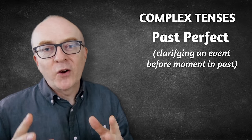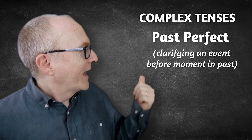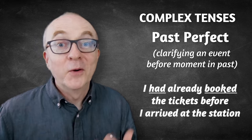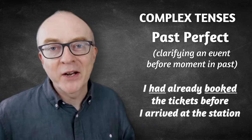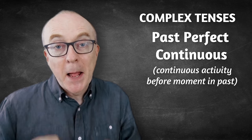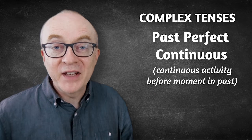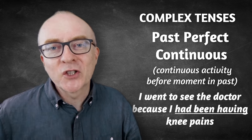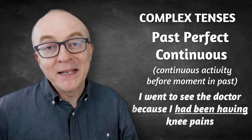Next, the past perfect. We use this often to clarify an event a moment before a moment in the past — I had already booked the ticket before I arrived at the station. Then past perfect continuous, used for a continuous activity before a moment in the past — I went to see the doctor because I had been having knee pains. Notice the contraction: I had → I'd → I'd been → I'd been having → I'd been having knee pains.